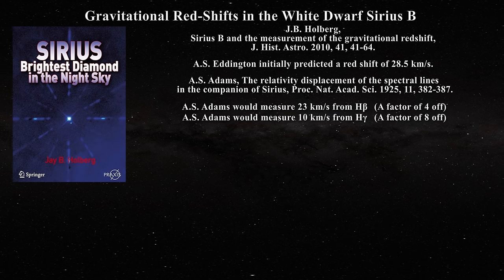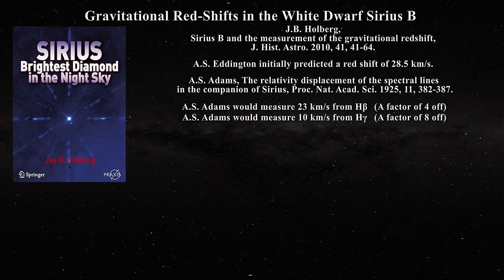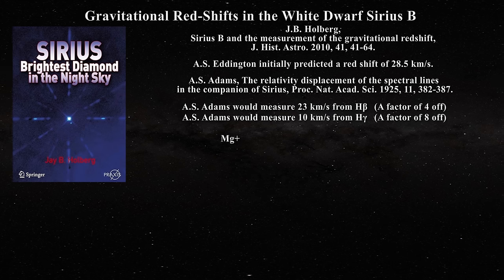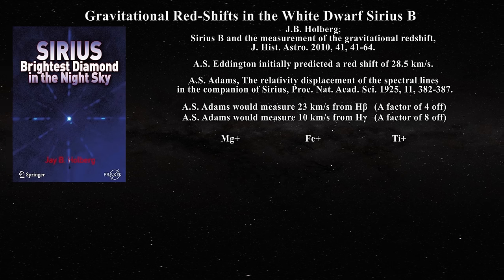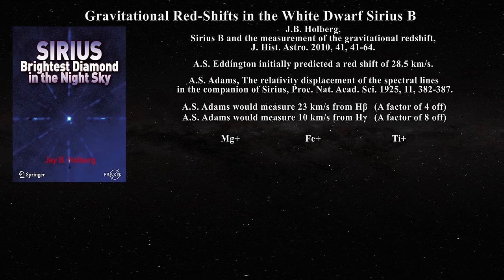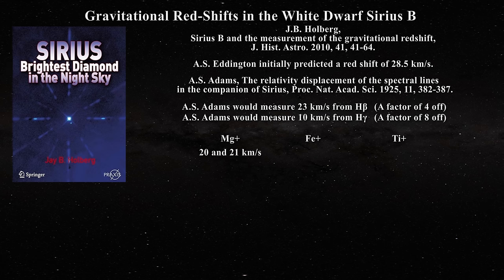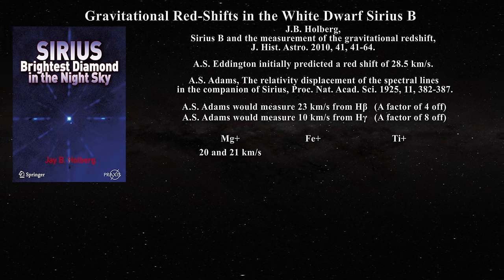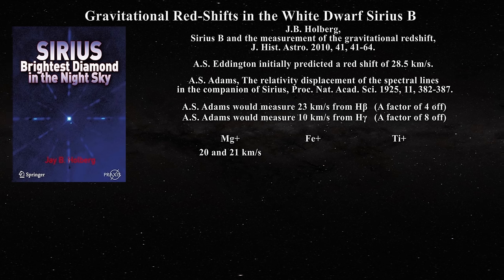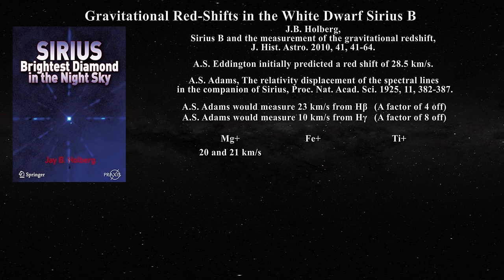To further highlight the magnitude of his errors, Adams' data was polluted with magnesium, iron, and titanium ion lines originating from Sirius A. He reported an average redshift of 20 kilometers per second for the magnesium ion, but this ion should have had a redshift of nearly 0 kilometers per second since it was coming from Sirius A. The titanium ion had an average redshift of only 4 kilometers per second.